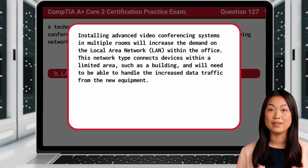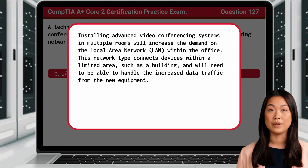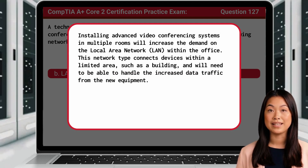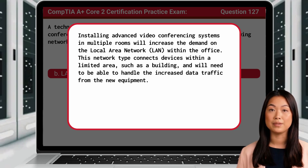Installing advanced video conferencing systems in multiple rooms will increase the demand on the local area network, or LAN, within the office. This network type connects devices within a limited area, such as a building, and will need to be able to handle the increased data traffic from the new equipment.